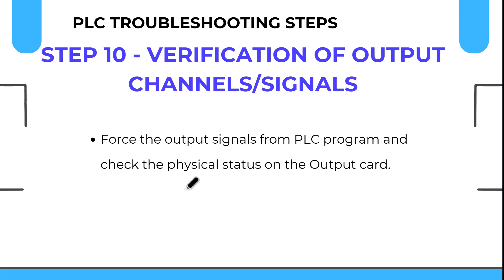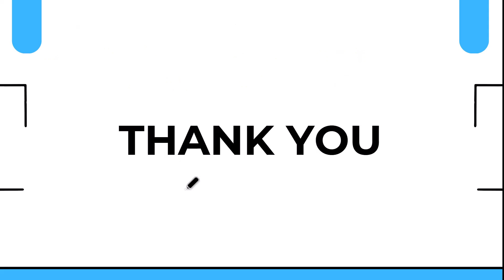To verify whether a channel is faulty or whether a signal is reaching the input card, go to the PLC program or hardware configuration and inspect that specific channel. Similarly, the status of PLC output channels can be verified by forcing a signal onto the specific channel in the PLC program. A technician can then check whether the 24V digital output signal is appearing on that specific output channel, confirming the output card is functioning correctly.